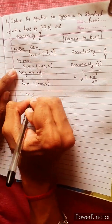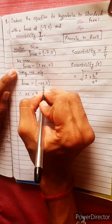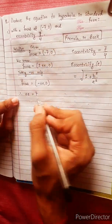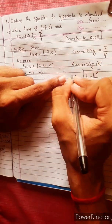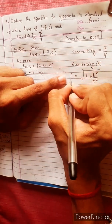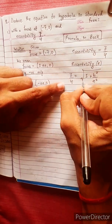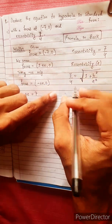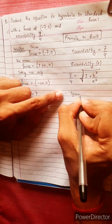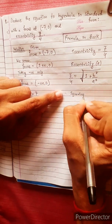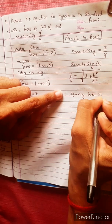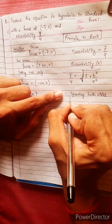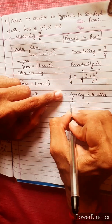Comparing: minus ae, 0 equals minus 7, 0, so ae equals 7. Eccentricity equals 7 by 4. Squaring both sides: 7 squared equals 49, 4 squared equals 16.